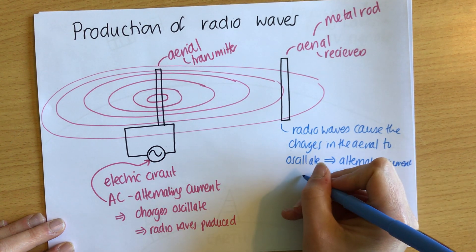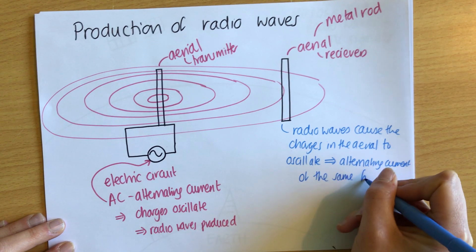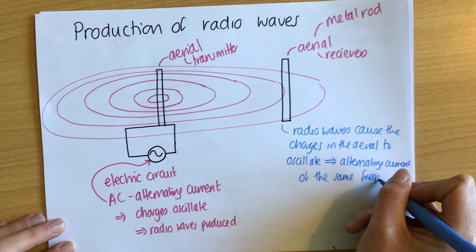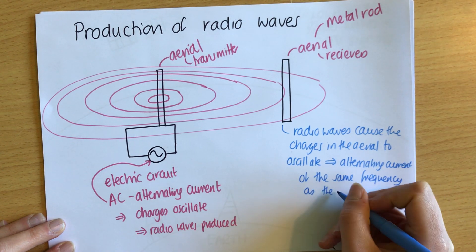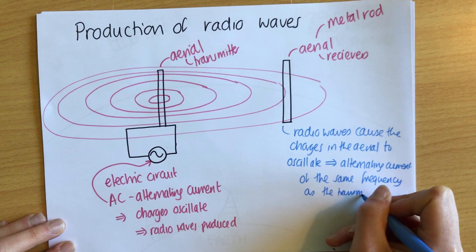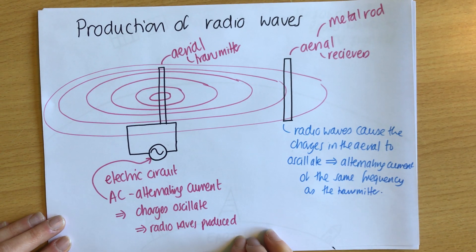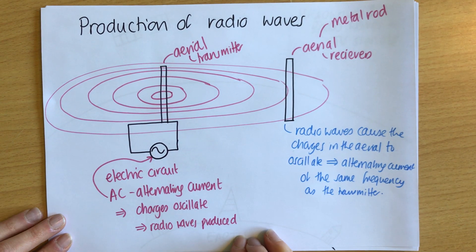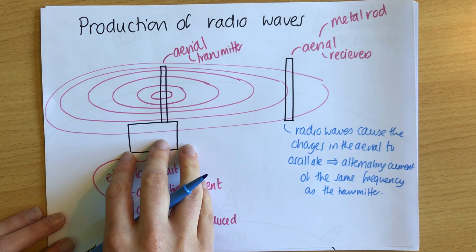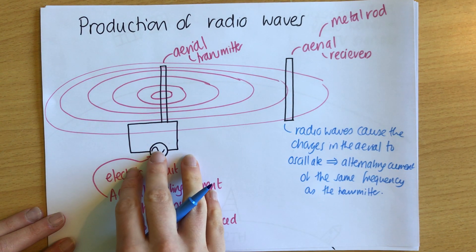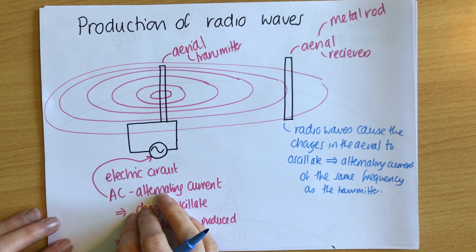The oscillating current produced at the receiver is at the same frequency as the transmitter. Frequency is how many oscillations there are per second, measured in hertz. So if the transmitter had a 5 hertz oscillation — 5 oscillations per second — the receiver would also oscillate at 5 oscillations per second.